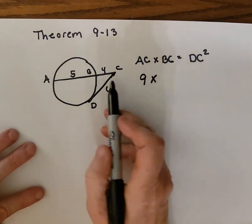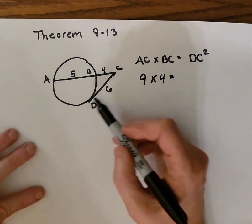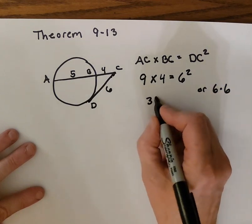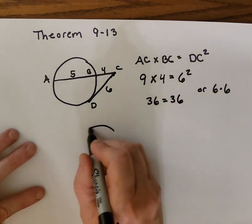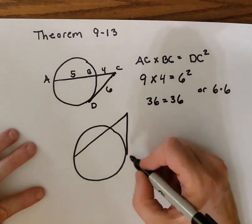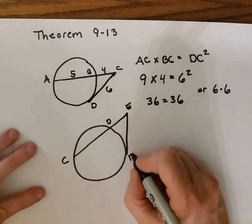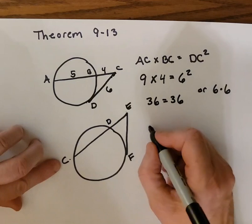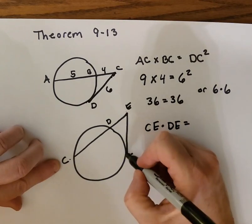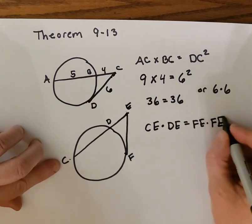Let's verify: AC equals 9, multiplied by the external part which is 4, and then we compare to the tangent segment squared — 6 squared, or 6 times itself — which is 36. So 36 equals 36. Theorem 9-13 says: when a secant meets outside the circle at a point with a tangent, the entire secant segment CE multiplied by the external part DE equals the tangent FE multiplied by itself, or FE squared.